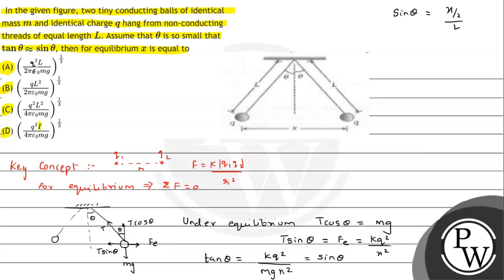Sin theta ki value from the triangle we can say will be nothing but x/2 upon L. We can see this distance is x/2 and length of string is given as L. So according to this triangle, sin theta will be opposite, that is x/2 upon L.